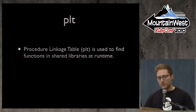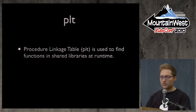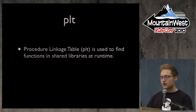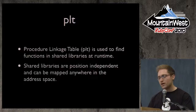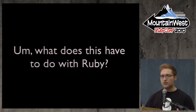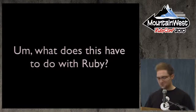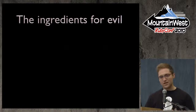The PLT — procedure linkage table — is used to find functions in shared libraries at runtime. Shared libraries are position-independent and can be mapped anywhere in the address space. By now you should be thinking: what does this have to do with Ruby? Well, it has a lot to do with Ruby — these are the ingredients we need to do serious evil.